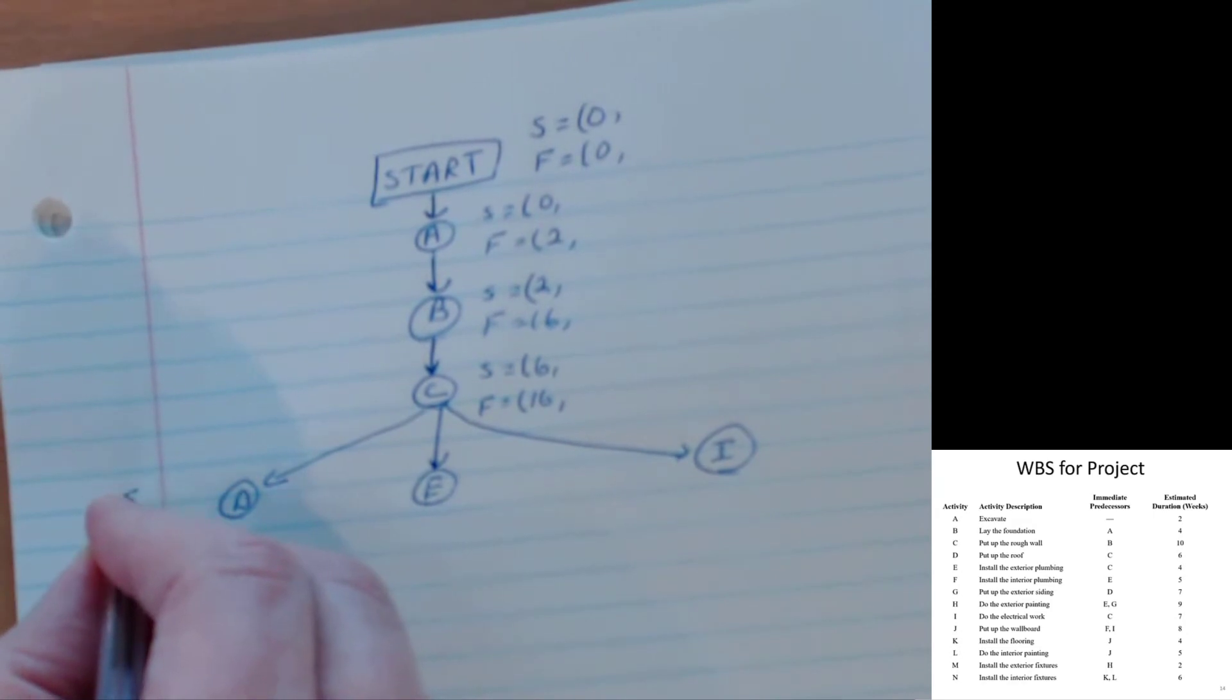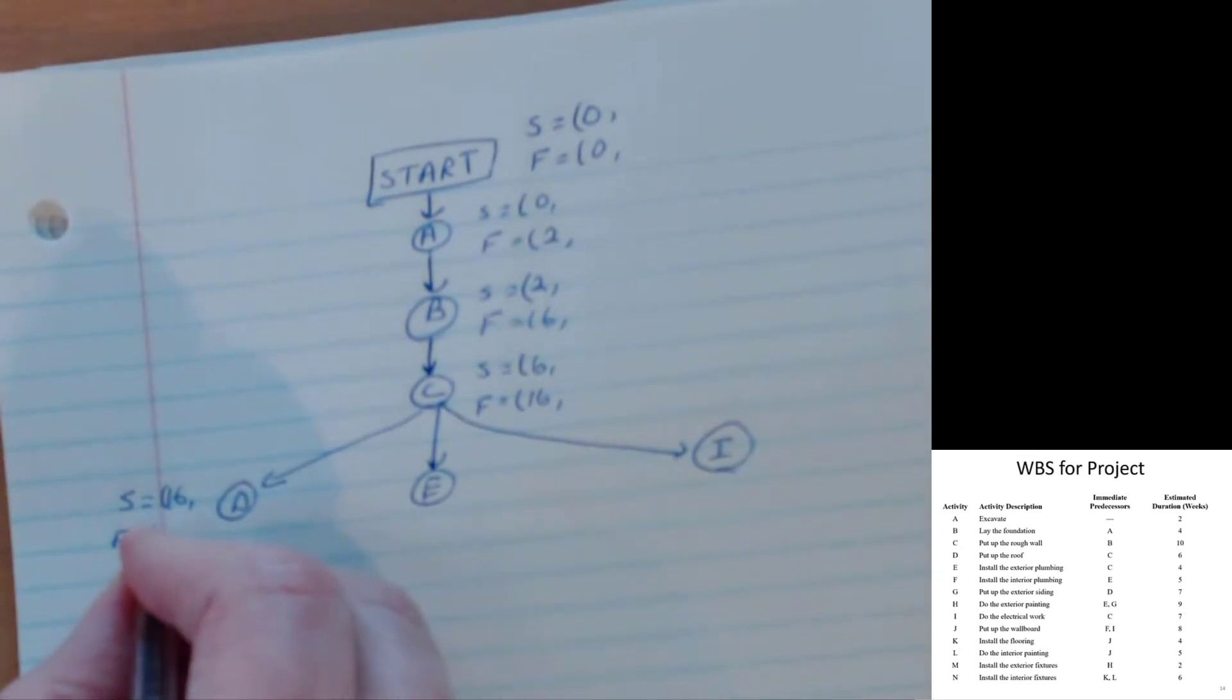Next step, I'm just flowing through now. I've got E and D. All these can start. When can D start? D has to wait for C to be done. So D can't start until period sixteen. When can it finish? D takes six weeks. Six plus sixteen, that's twenty-two. It's going to get a little bit squishy in there.